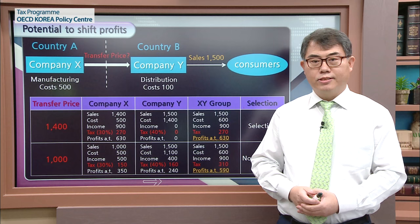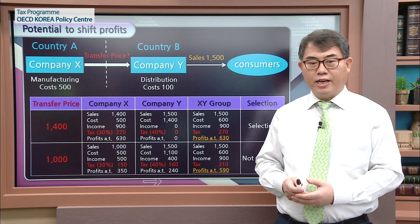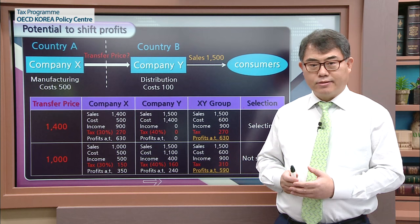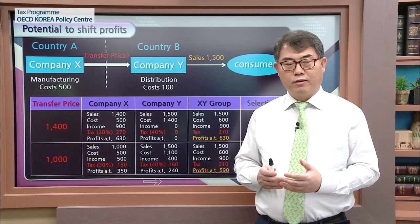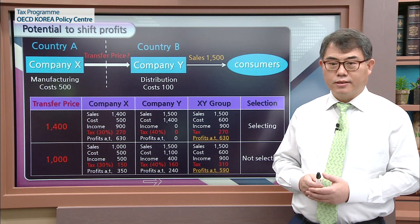The example in this slide shows how multinational enterprises shift their profits into other countries using transfer pricing mechanisms. Company X and Company Y are associated enterprises of the XY group. Company X produces a watch in Country A and exports it to Country B, to the associated enterprise Company Y. Company Y then resells the products to consumers located in Country B.